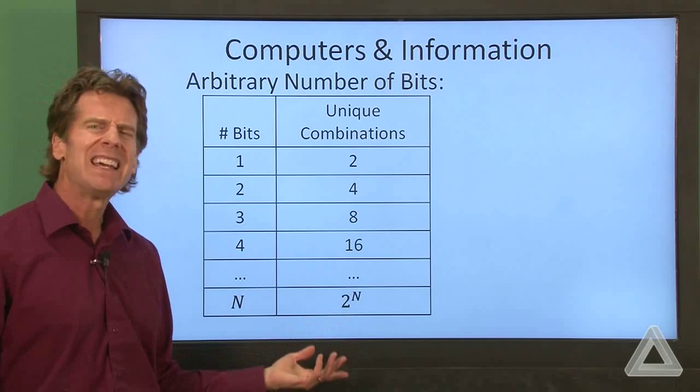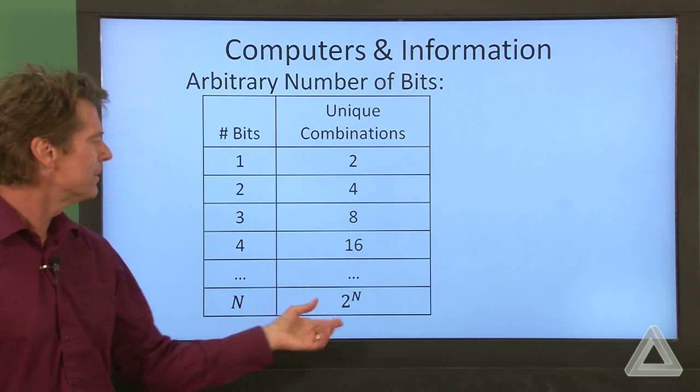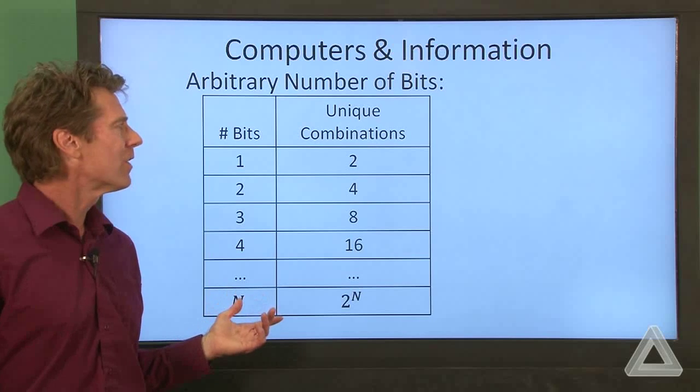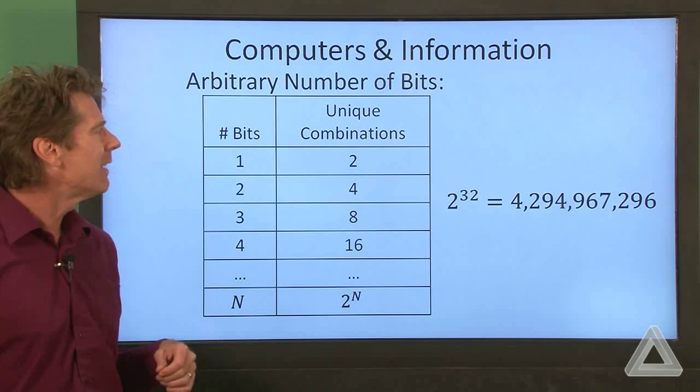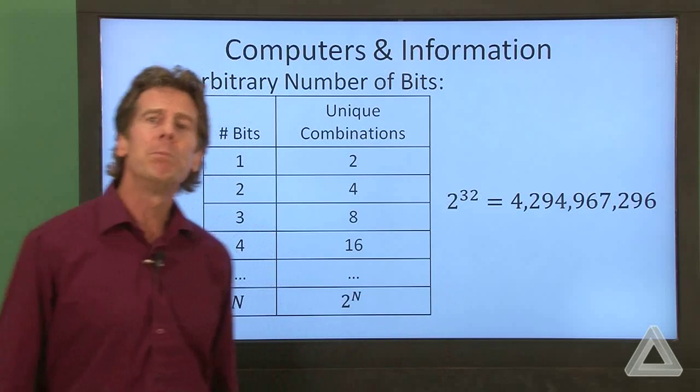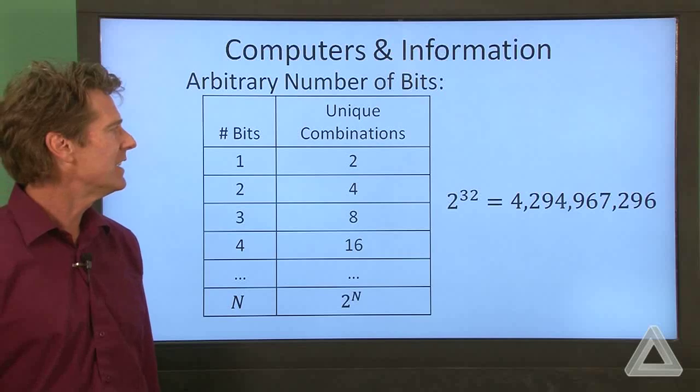So n times, or two times two times two, n times. And n doesn't have to be very large before we get a huge number. If we have 32 bits, we have over four billion different combinations.